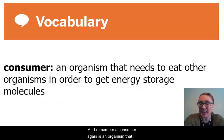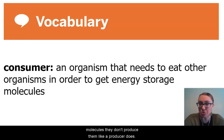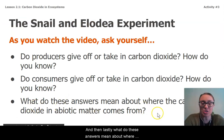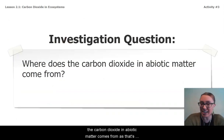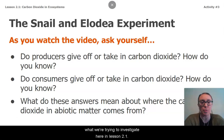Remember, a consumer is an organism that needs to eat other organisms to get energy storage molecules — they don't produce them like a producer does. And then lastly, what do these answers tell us about where the carbon dioxide in abiotic matter comes from? That's what we're investigating in lesson 2.1.